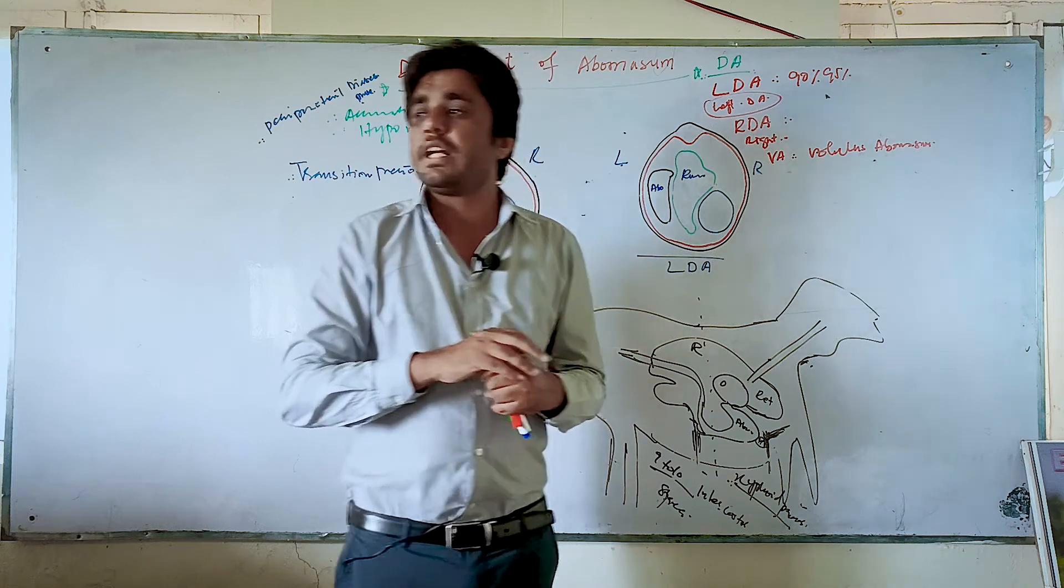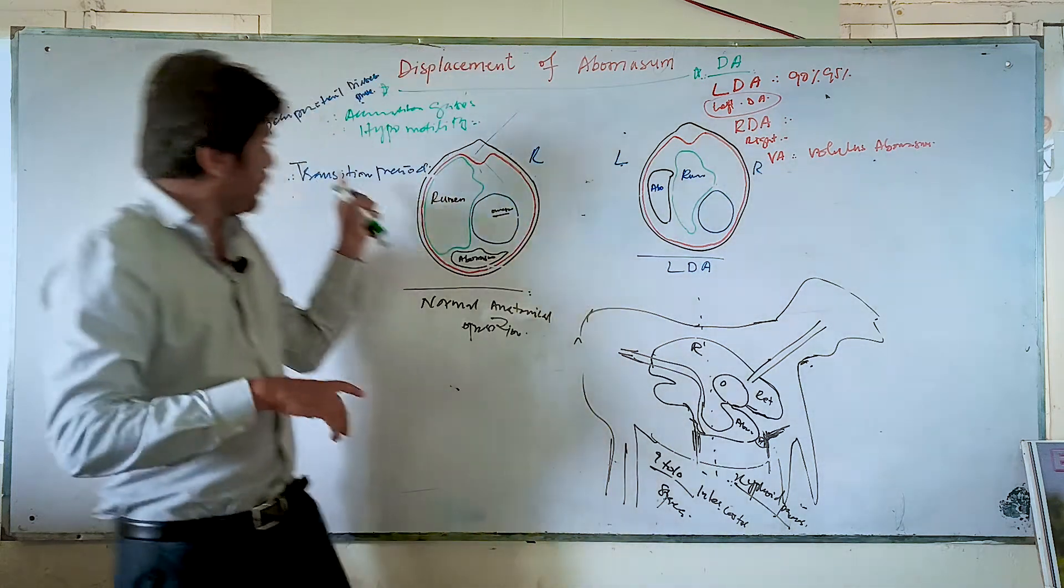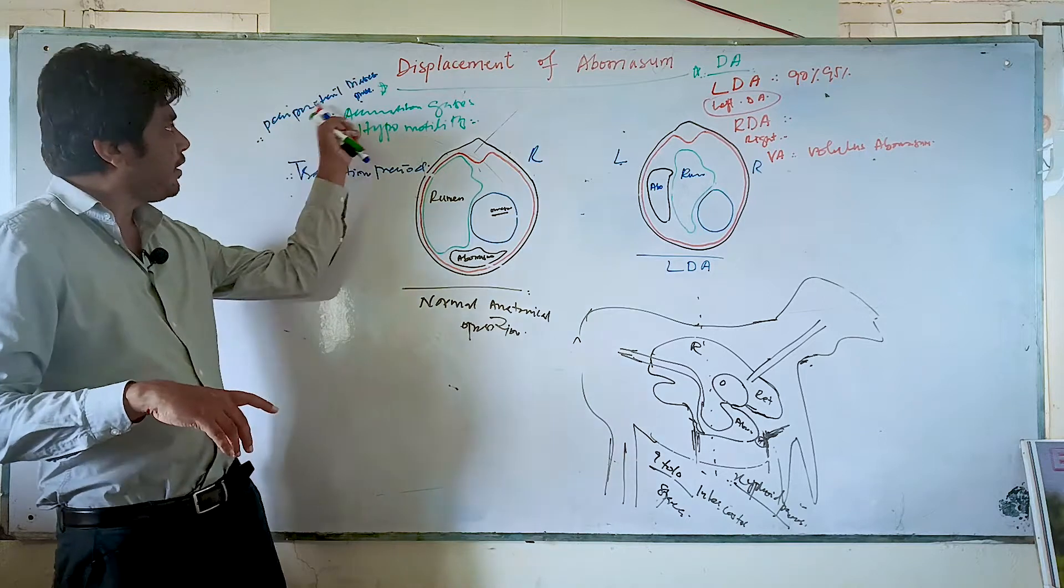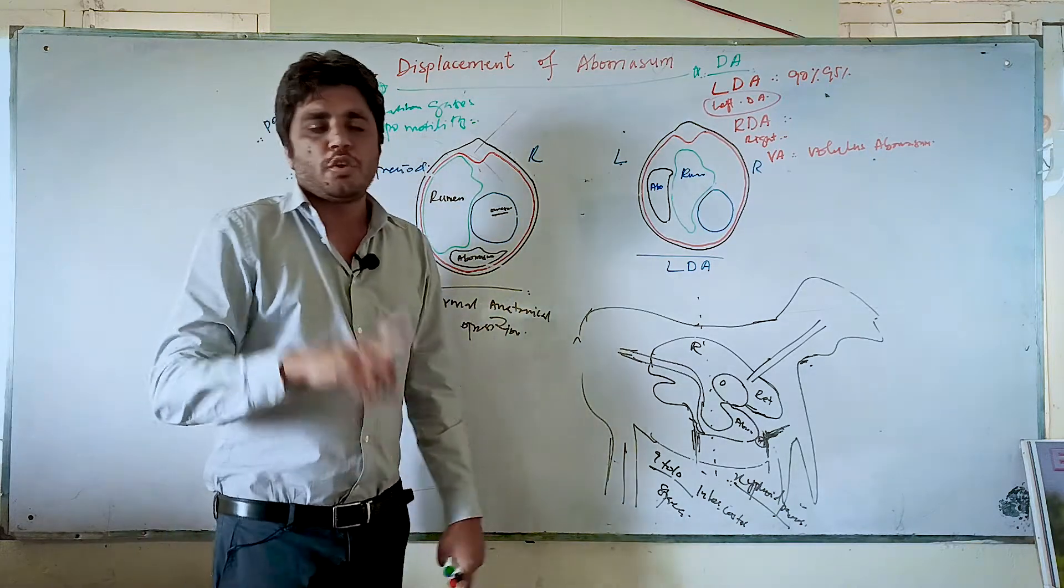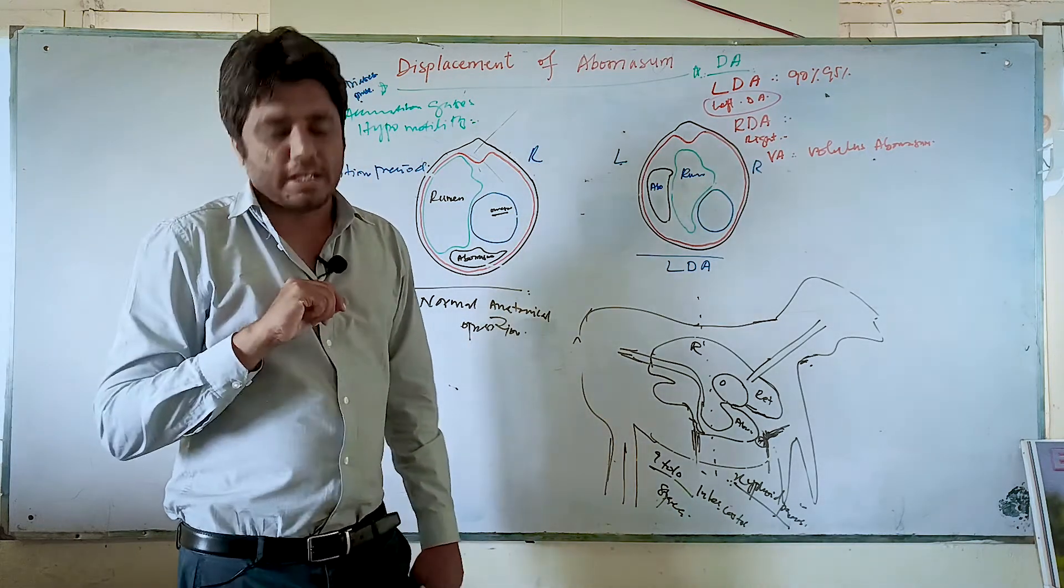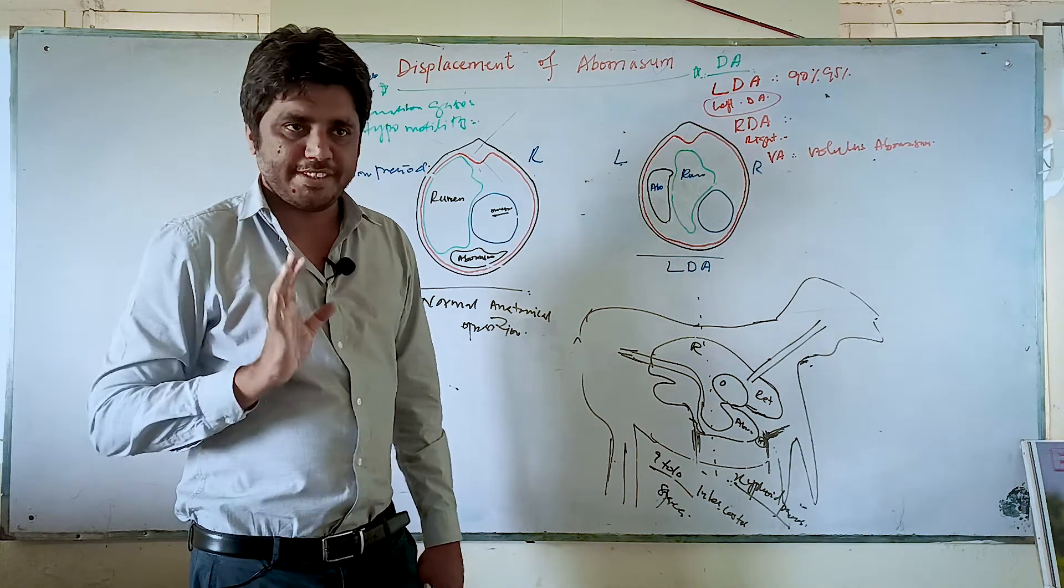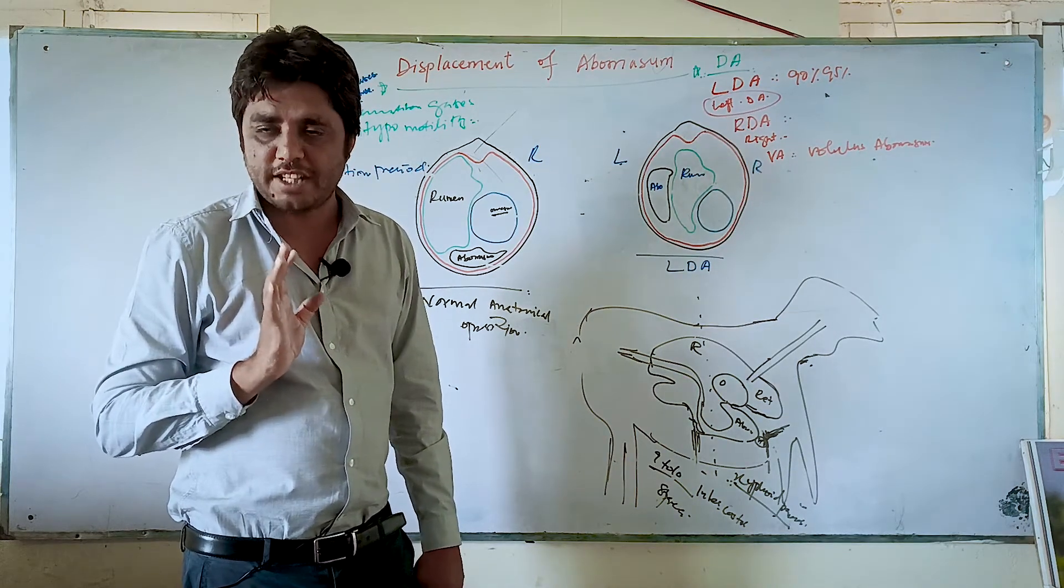These kinds of diseases are associated with the transitional period or pre-parturient period. So the number one risk factor is parturition. Believe me, the number one risk factor for displacement of the abomasum is parturition.